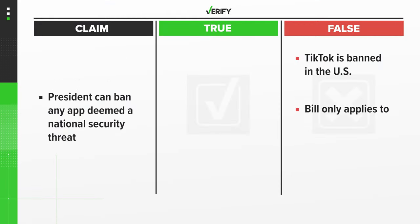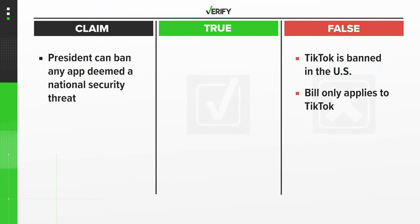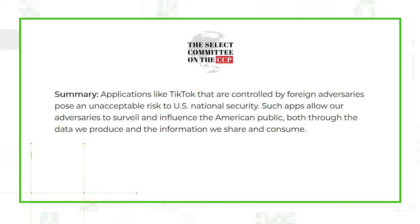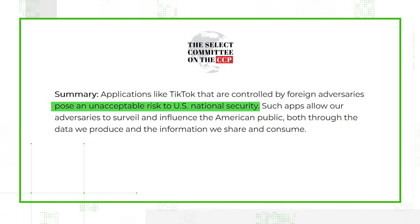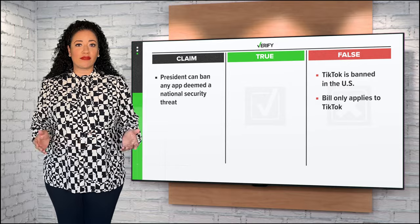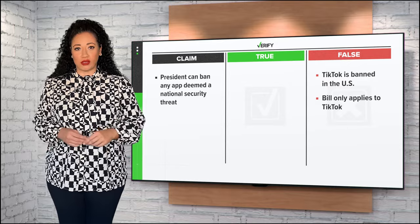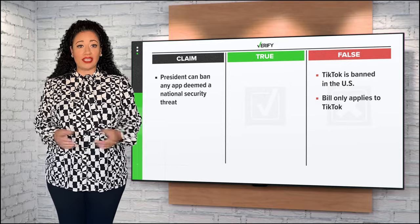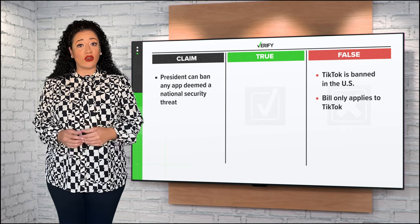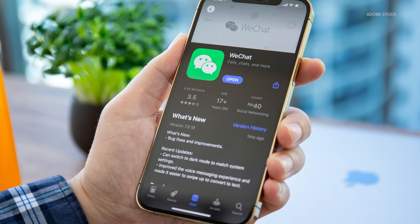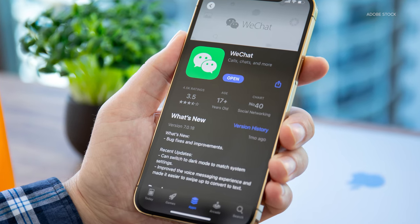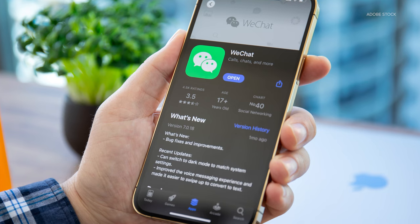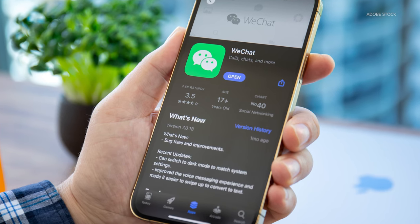Next up, the bill does not only apply to TikTok. According to the authors of the bill, any social media apps that are controlled by foreign adversaries of the U.S. that pose an unacceptable risk to U.S. national security could be banned. Foreign adversaries are defined in Title 10 of the U.S. code and currently include Russia, Iran, North Korea, and China. The Electronic Frontier Foundation says Chinese instant messaging app WeChat could also be banned under this bill.